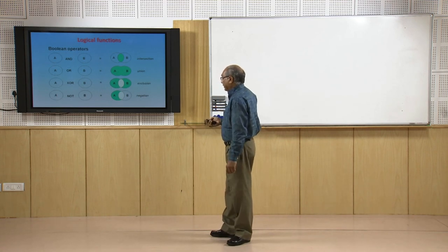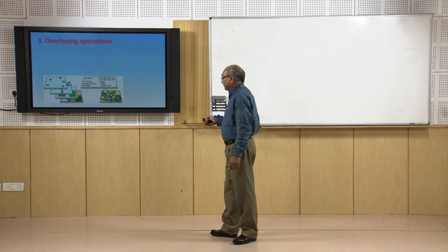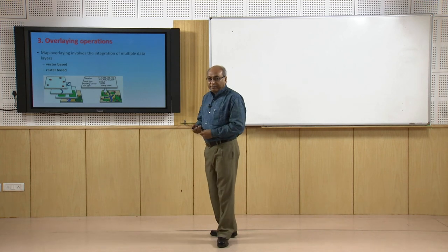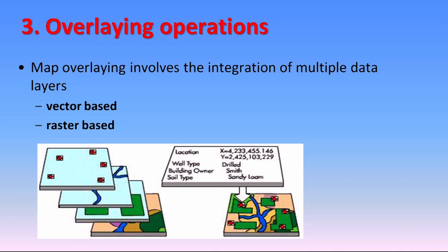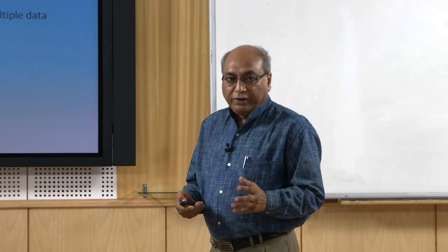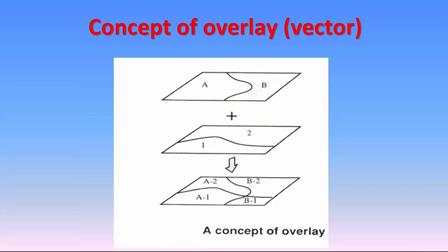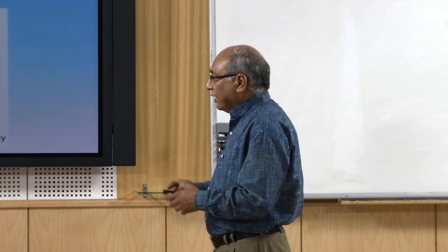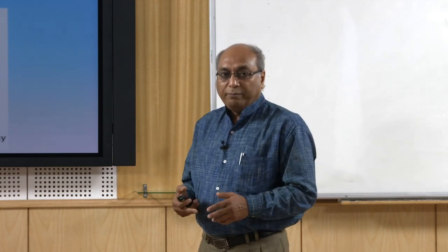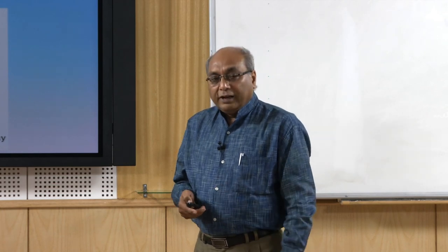This overlaying operation falls under logical functions. Overlaying operations can be performed on both vector and raster data, but are difficult to perform on TIN data. In the simplest example, if one map has 2 units and another has 2 units, when we overlay or intersect them we end up with 4 units - essentially multiplying. With many polygons in one map, the output map could have hundreds of polygons, which is the difficulty with vector data, but not with raster.